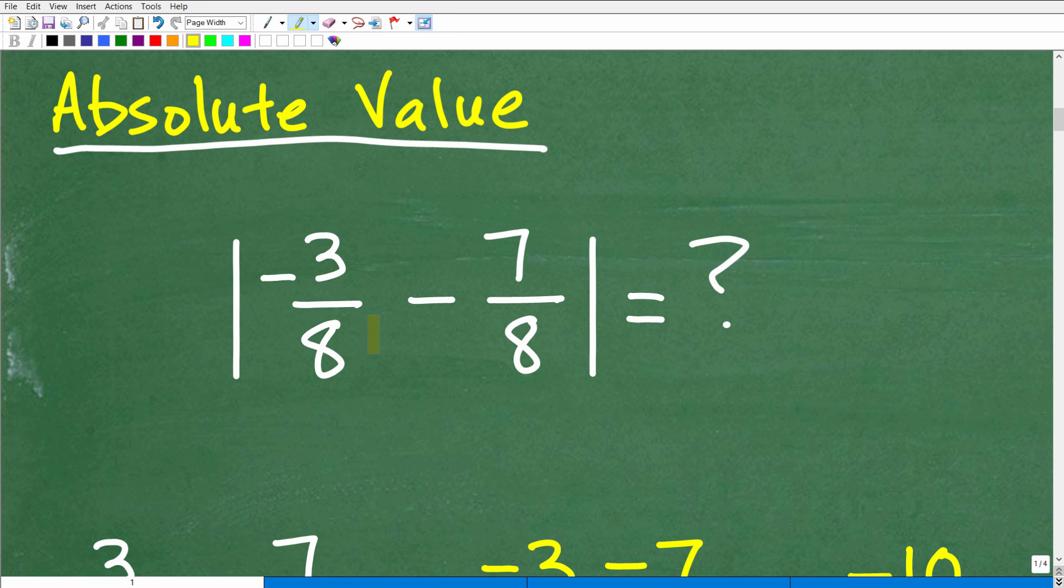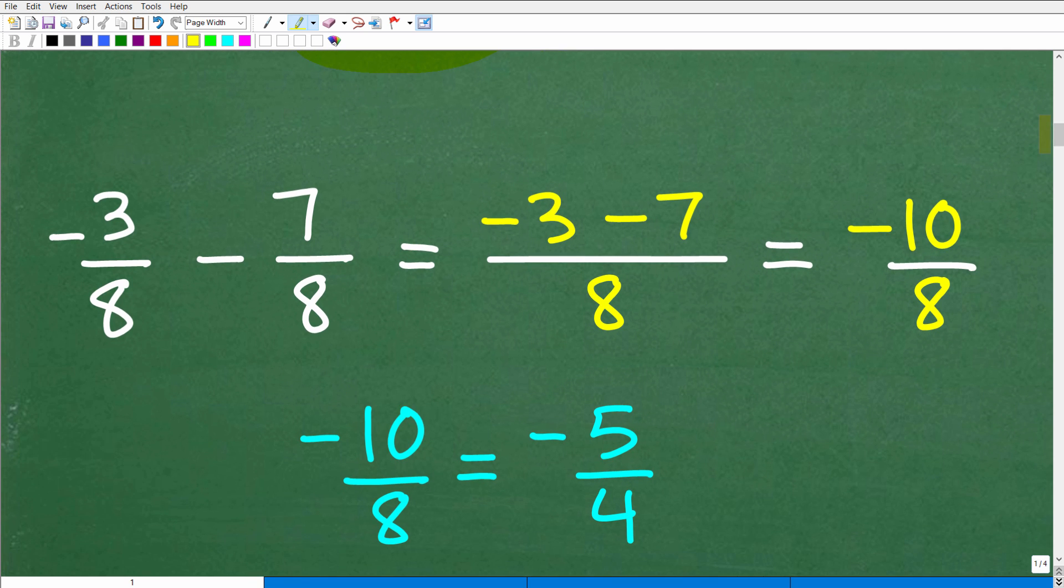All right, so the first thing we need to do is take care of these fractions right here. So we have negative 3 over 8 minus 7 eighths. We're going to have to simplify this, so hopefully you have strong fraction skills. This is actually quite easy. So we can subtract these fractions because they have the same denominator. Okay, so we'll have that one denominator, 8. So we're just going to simply subtract the numerator, so that'll be negative 3 minus 7. So that's going to be our numerator, so negative 3 minus 7 is negative 10. That's going to be negative 10 over 8.